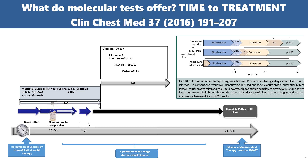What molecular diagnosis offers is reduced time to treatment — that's a key advantage. Blood culture takes days to weeks, but molecular diagnosis provides results within one to two hours. We get results from tests such as PNA-FISH (peptide nucleic acid fluorescence in situ hybridization) or rapid film array tests, which provide results within hours.